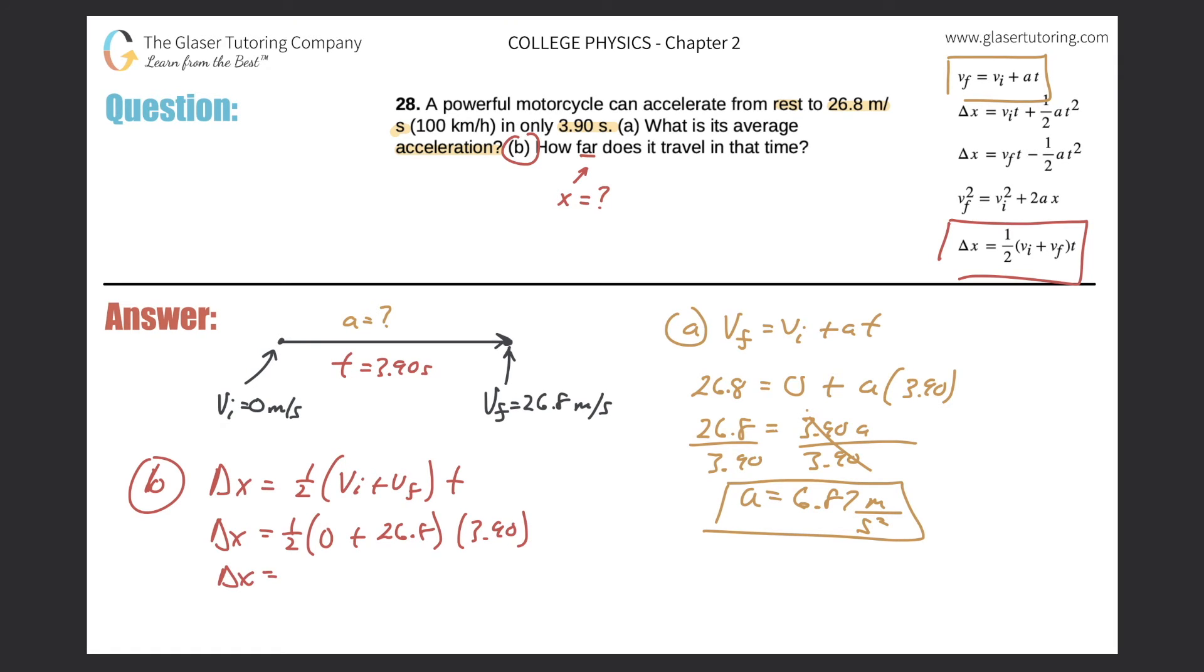So now just doing the math, cleaning it up, it's going to be one half, obviously zero plus 26.8 would be 26.8, and times 3.90. Okay,